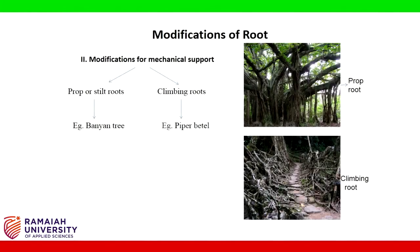Modifications for mechanical support: under that we have prop or stilt roots, and climbing roots. Example for prop or stilt root: banyan tree. Example for climbing root: Piper betle.